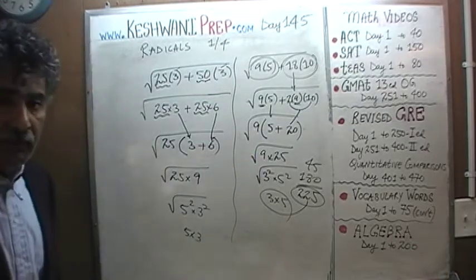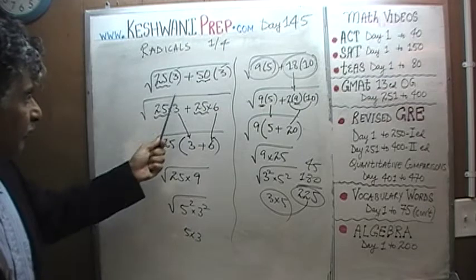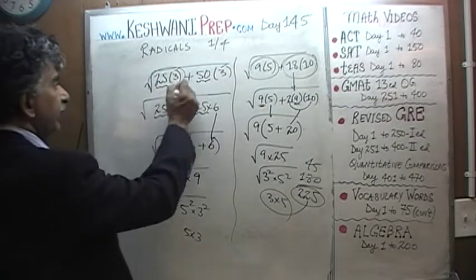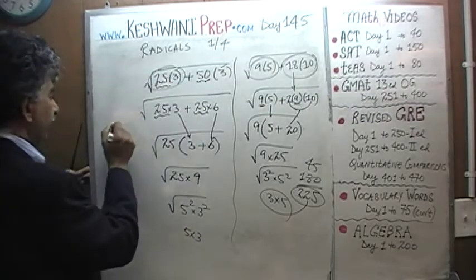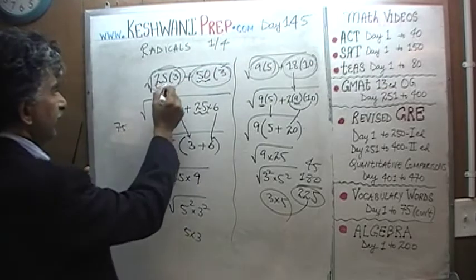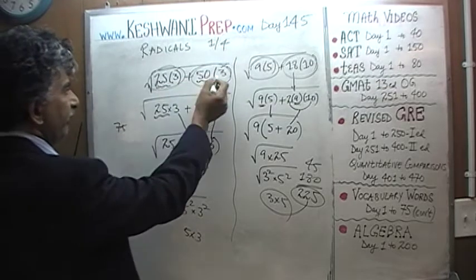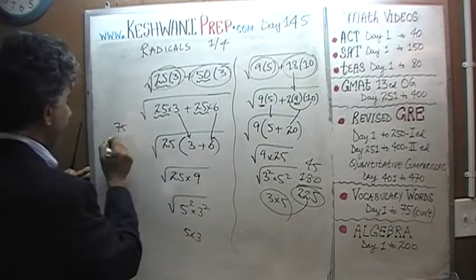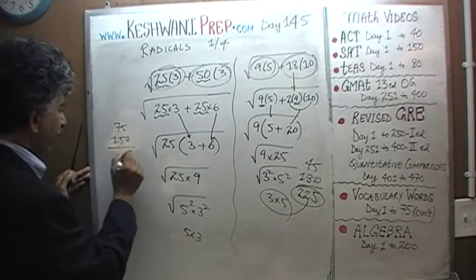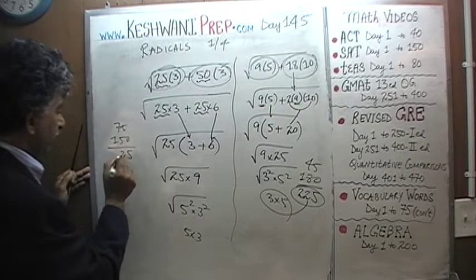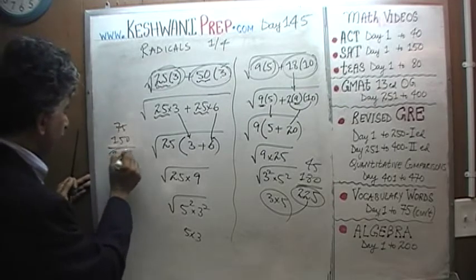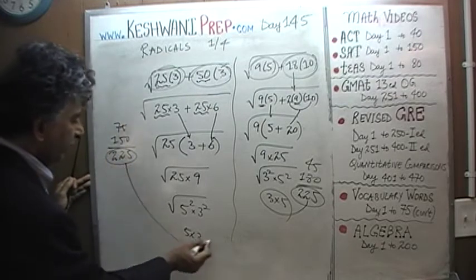Similarly, the second problem won't appear on the exam either. 3 times 25 is 75 and 3 times 50 is 150. That adds up to 225, and the square root of 225 is 15. Neither of them make good exam candidates.